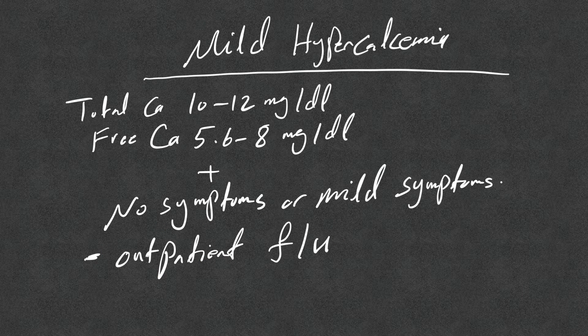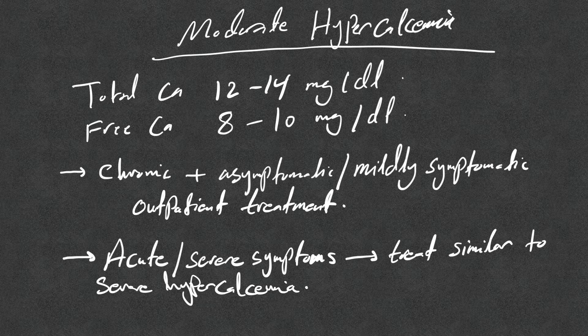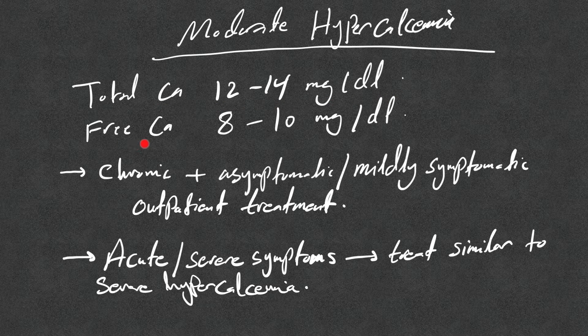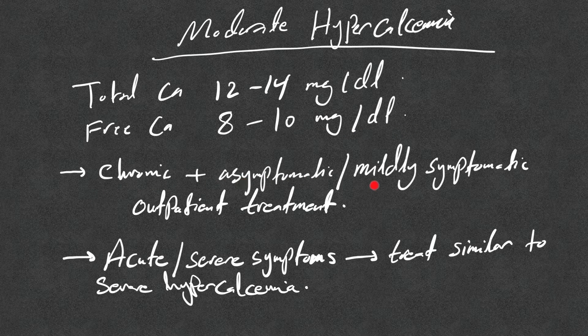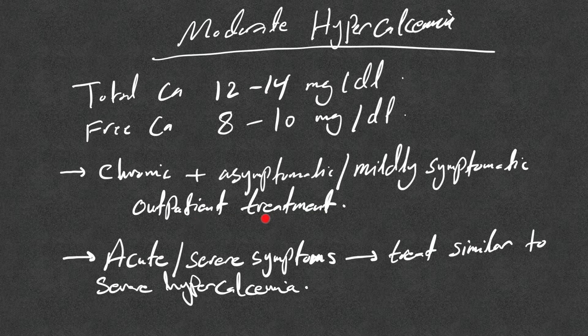How about moderate hypercalcemia? The total calcium as we mentioned 12 to 14 milligrams per deciliter or free calcium 8 to 10 milligrams per deciliter. If it is chronic and asymptomatic or mildly symptomatic, we treat it similar to mild hypercalcemia with outpatient follow-up.